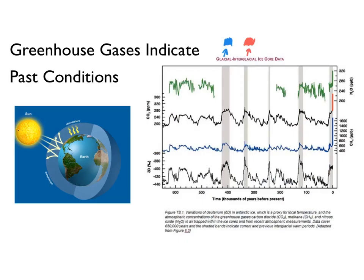Whenever CO2 is high, whenever methane is high, whenever nitrogen oxides are high, we get higher temperatures, as shown from those isotopes. If I color in red, these are interglacial periods — kind of like now. And these times down here in blue are glacial periods — when you've got continental-scale glaciers over much of Canada.